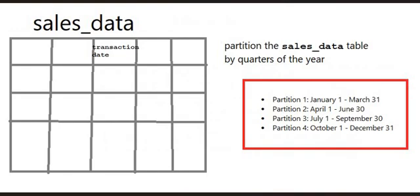Let's consider a table named sales_data that stores information about sales transactions. One of the columns in this table is transaction_date, which holds the date of each transaction. Now we want to use range partitioning based on the transaction_date column. Different people may decide differently — some may use transaction date, others may use transaction ID. That entirely depends on the person, but the technique remains the same. So suppose we decide to partition the sales_data table using transaction_date by quarters of the year. Here's how the range partition could be set up.